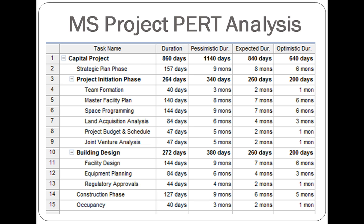Microsoft Project does this automatically; however, it can be done by hand as well. Essentially, all three estimates are considered, but the formula gives the realistic estimate 4 times the weight of the pessimistic and optimistic estimates. The resulting durations can be seen in the duration column. Partial days after calculations were rounded up to the nearest whole day. Take particular note of the overall estimated project duration, which is 860 days, as well as the duration of the first three subtasks: 157 days, 40 days, and 140 days. I will visit these numbers again later.